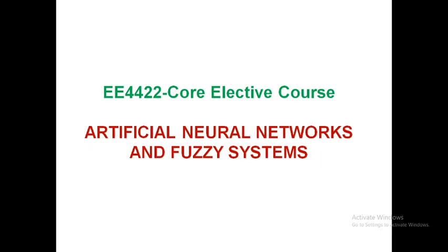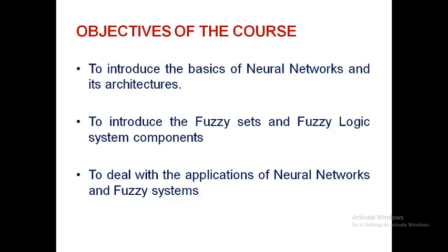Good afternoon everyone. This semester we'll study the Artificial Neural Networks and Fuzzy Systems subject. It is a core elective course and the corresponding course code is EE422.